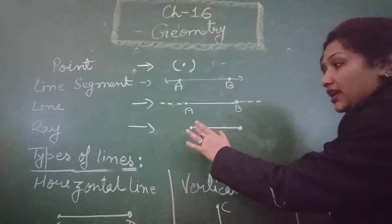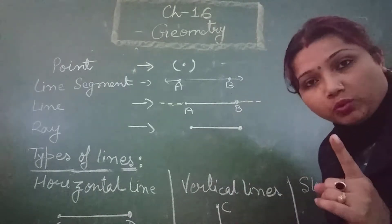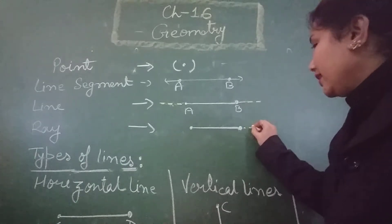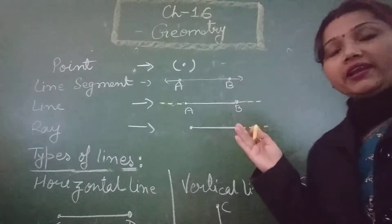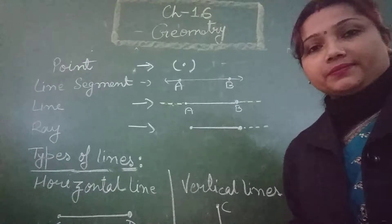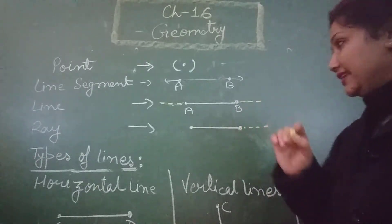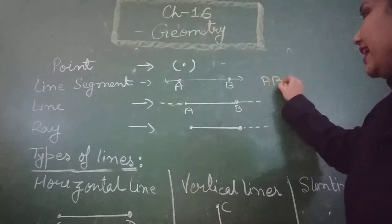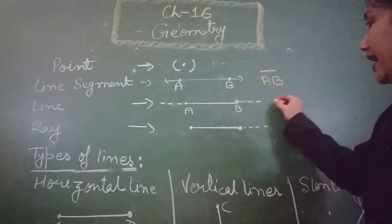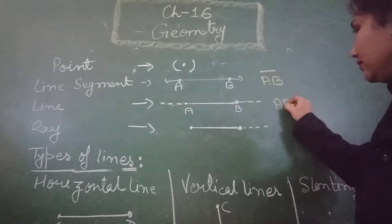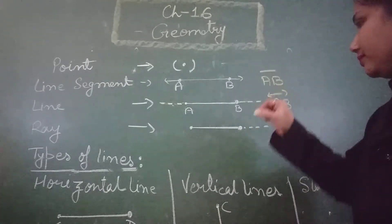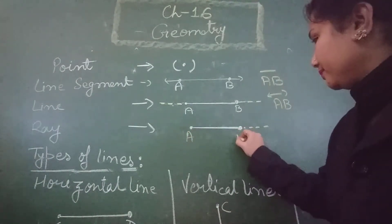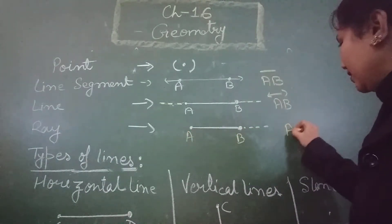Next, ray. Ray has one end point. And it can extend from one end, from one side. It can extend from one end side. Line segment is represented like this. Line is represented like this. And the ray is represented by this.